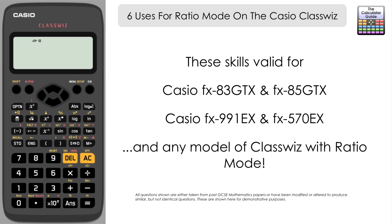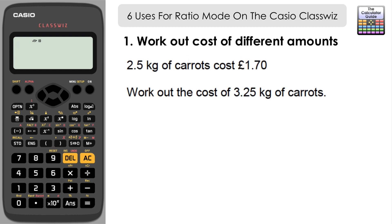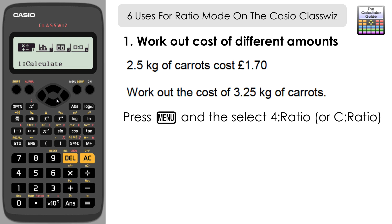Let's get started and look at the first of the six uses. The first use is working out the cost of different amounts of an item we want to buy. We have 2.5 kilograms of carrots which costs £1.70, and we need to work out the cost of 3.25 kilograms of carrots.